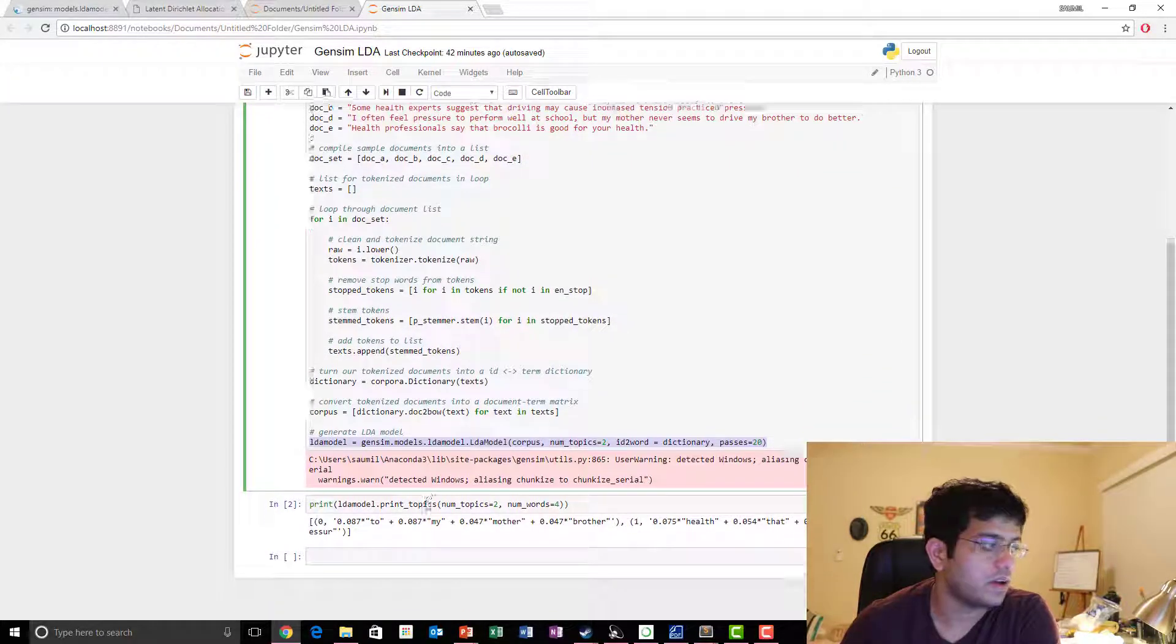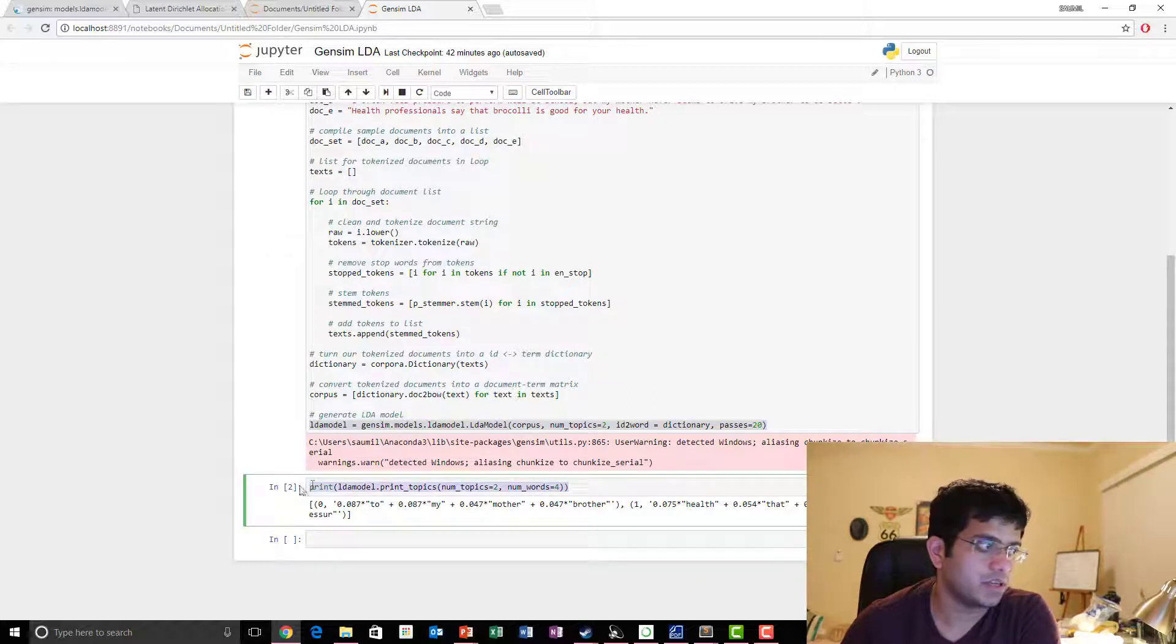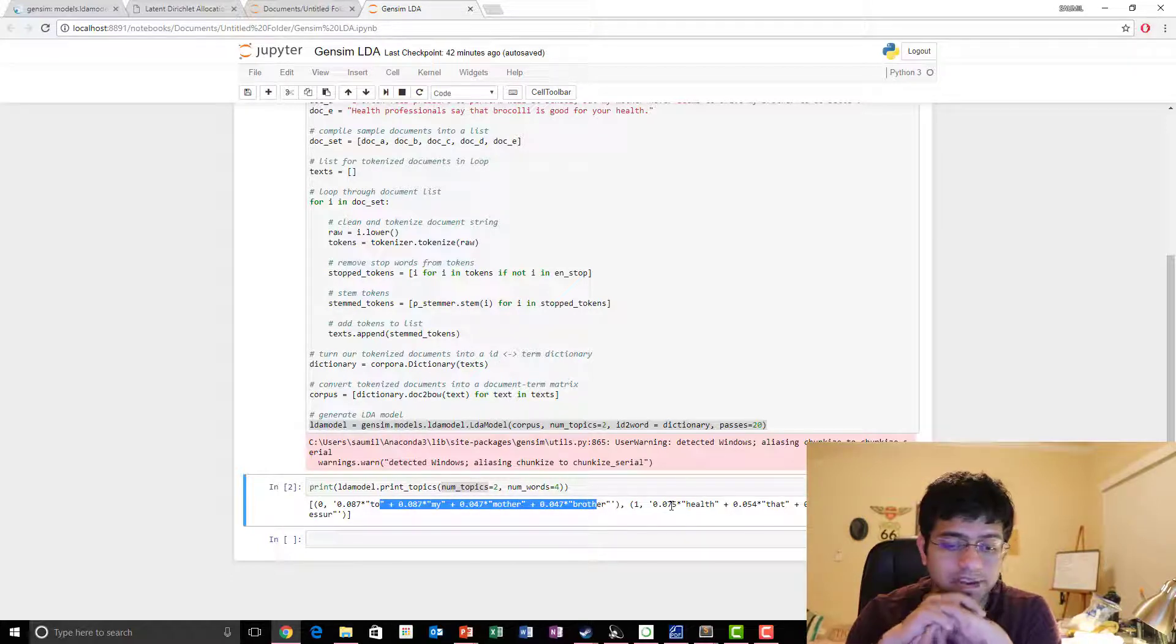We try to print the topics and we get two comma-separated values which are basically two topics. We get two topics because we are looking for two topics. Each topic is represented over words and it tells you its representation of these words. What LDA actually empowers you is to actually find similarity in documents using topics without even assigning any labels to the topic.